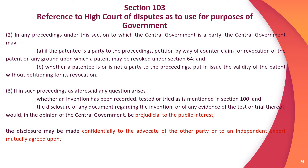Section 103 Subsection 2: In any proceedings under this section to which the central government is a party, the central government may: (a) if the patentee is a party to the proceedings, petition by way of counter-claim for revocation of the patent on any ground as discussed under Section 64; and (b) whether or not the patentee is a party, put in issue the validity of the patent without petitioning for its revocation.